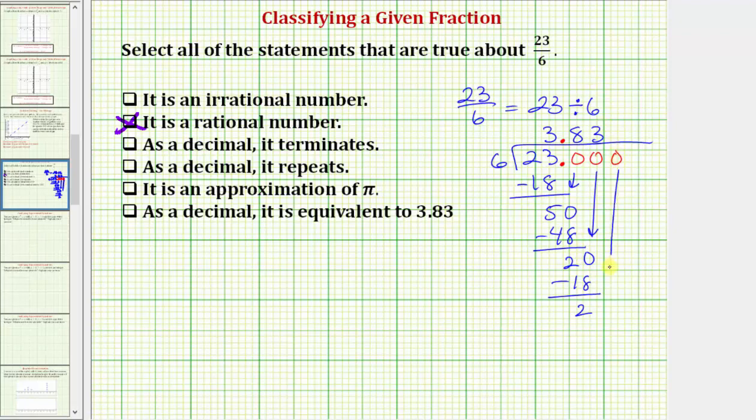Add another zero, bring it down. And we ask how many 6's in 20, which is the same question we asked last time, which we already know is 3. 3 times 6 is equal to 18, subtract. The difference is 2.